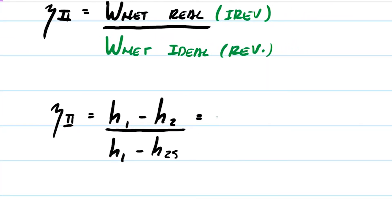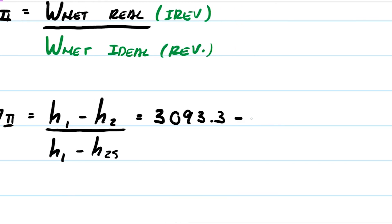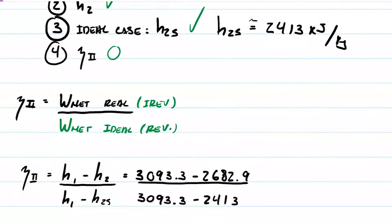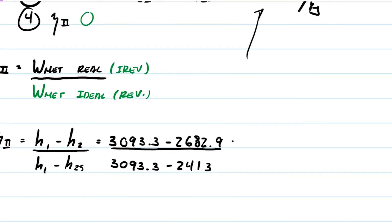Plugging down numbers that we know, this is 3093.3 minus 2682.9, dividing the whole thing by the same 3093.3 minus the new one that we found which is 2413. So what does this give us? This gives us 0.60326. So let's approximate that to 60.3%.